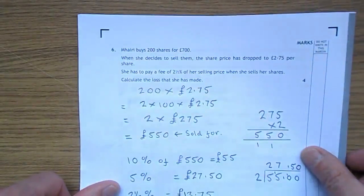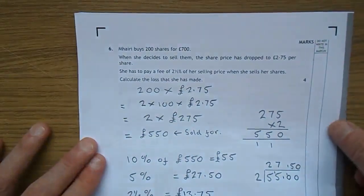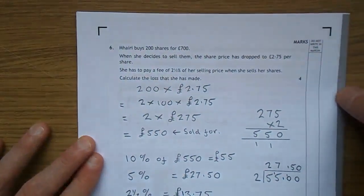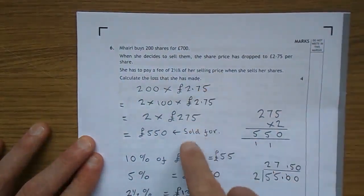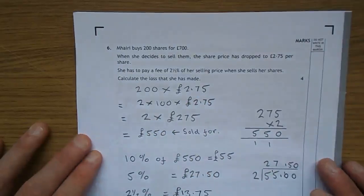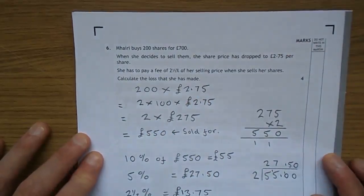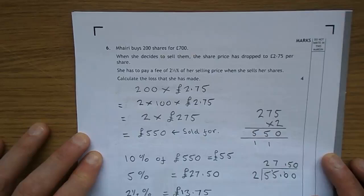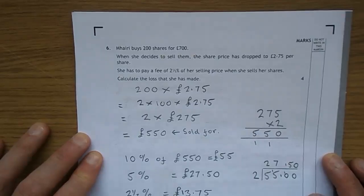On to number 6, a very wordy one here, wordy and quite a lot of quite tricky calculations here. Mary buys 200 shares for £700. When she decides to sell them, the share price has dropped to £2.75 per share. She has to pay a fee of 2.5% of her selling price when she sells her shares. Calculate the loss that she made.